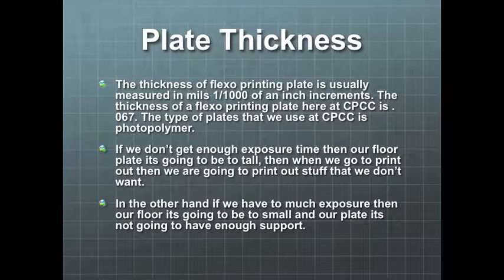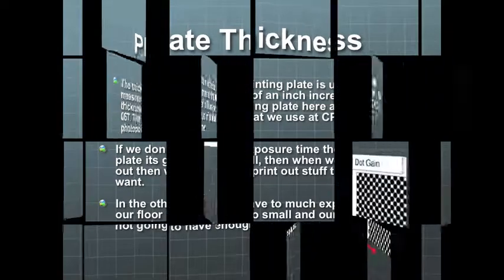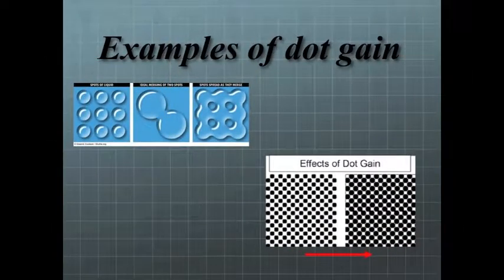If we don't get enough exposure time, then our floor plate is going to be too tall. Then when we're ready to print, we will print areas that we don't want or don't need to. On the other hand, if we have too much exposure, then our floor is going to be too small and our plate is not going to have enough support. Here you have some examples of dot gain.